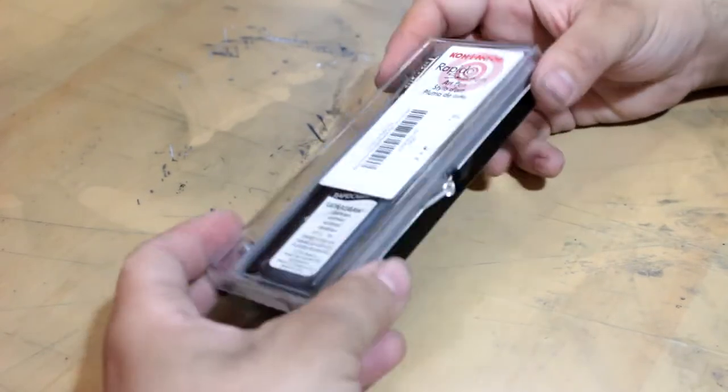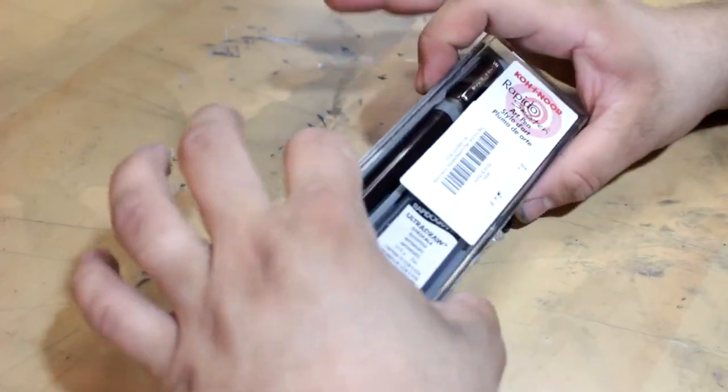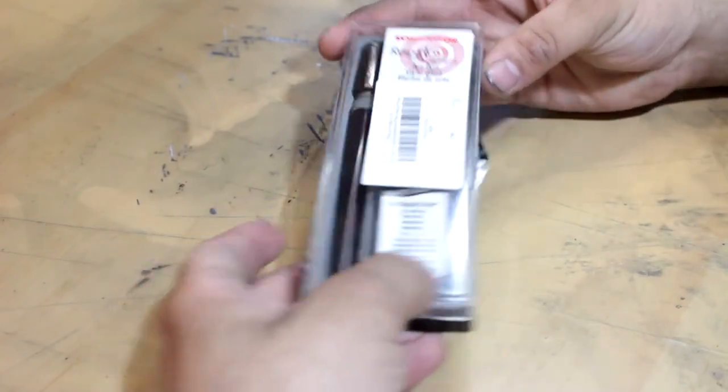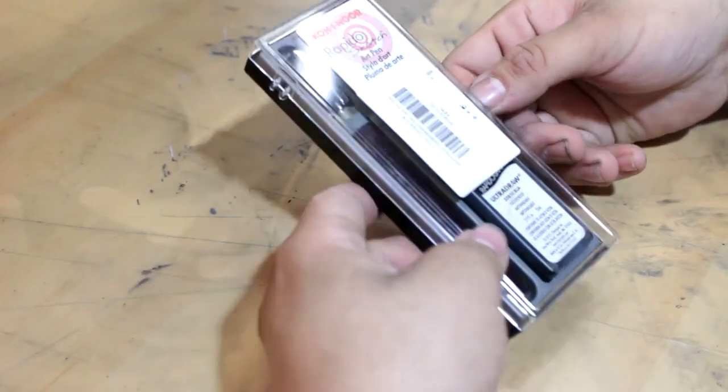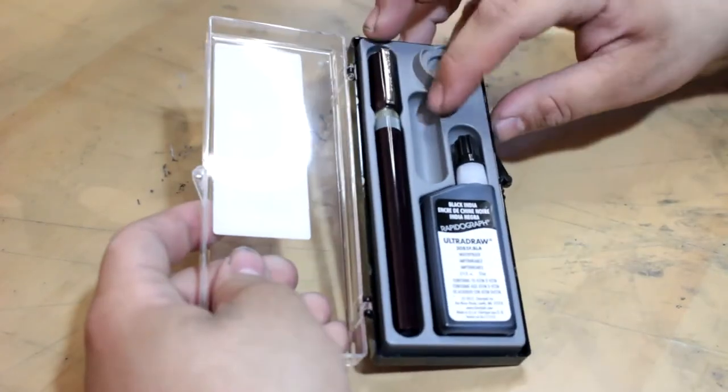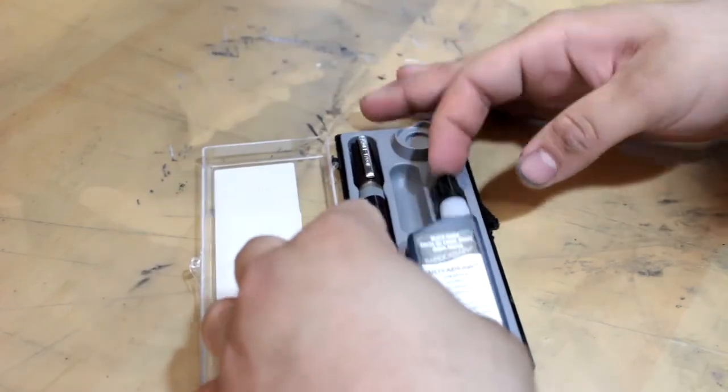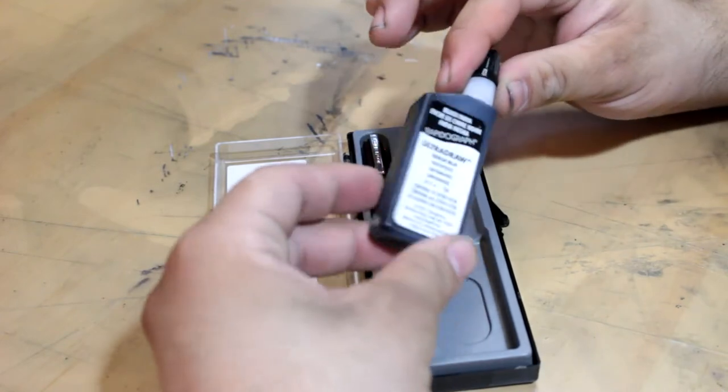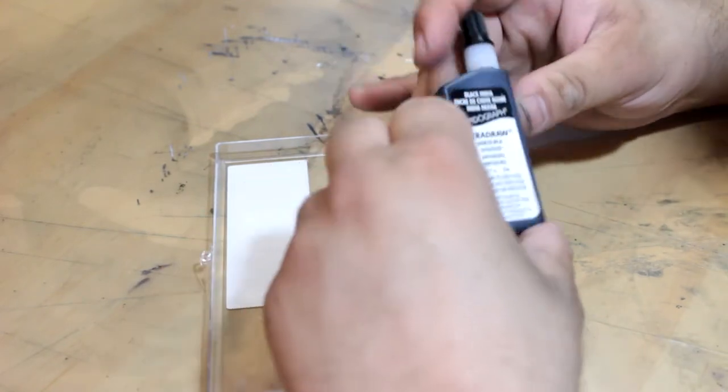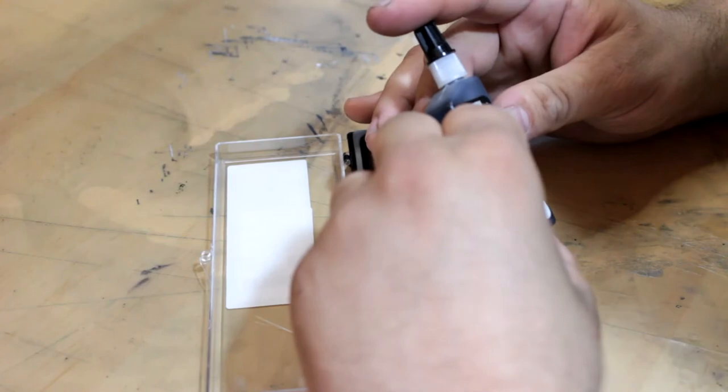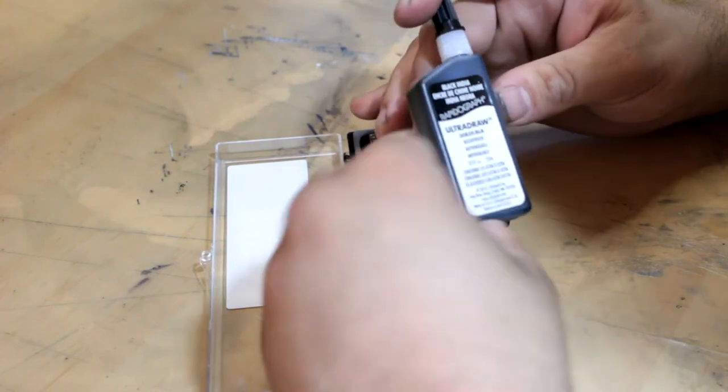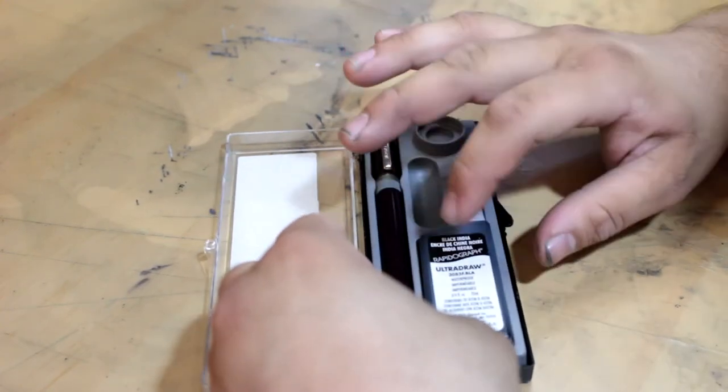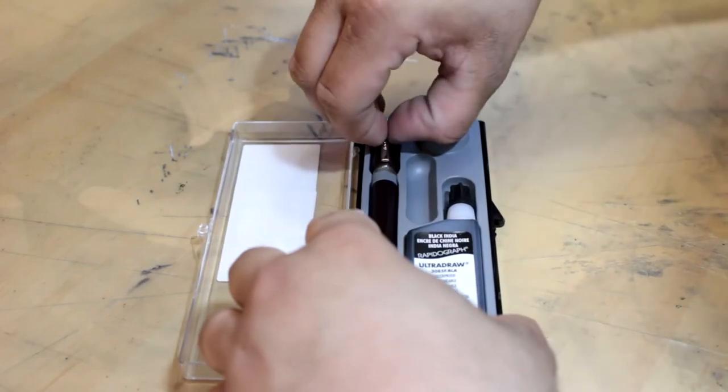The container does feel pretty cheap, I'm a little disappointed. Opening it up reveals a very cheap plastic tray, a bottle of ink - this is actually three-fourths fluid ounce, not full ounce, kind of weird. It has that shape to it that a lot of our German inks have, but it says made in the USA.